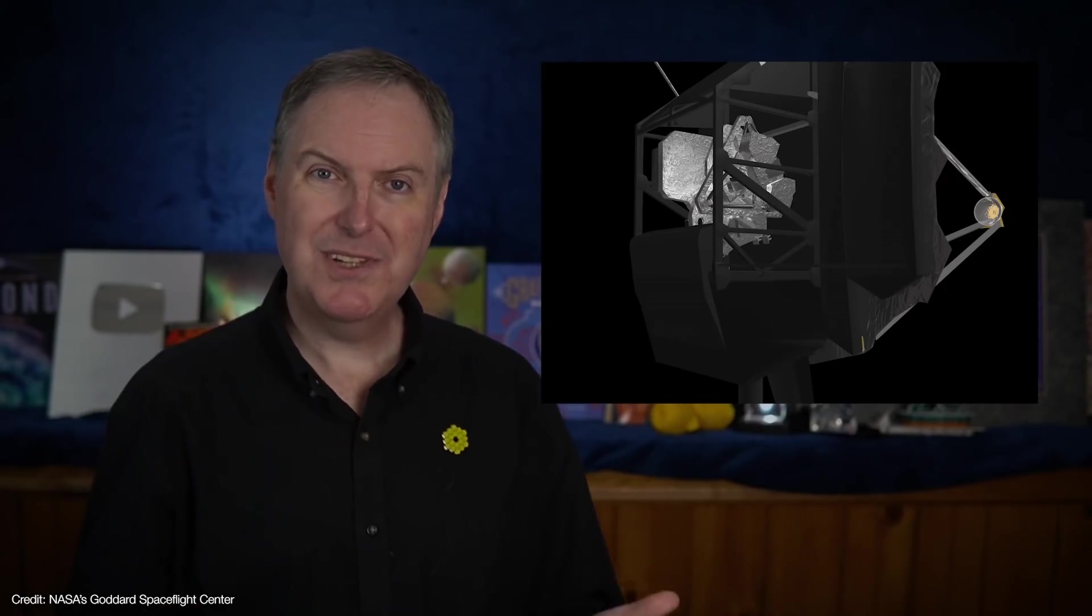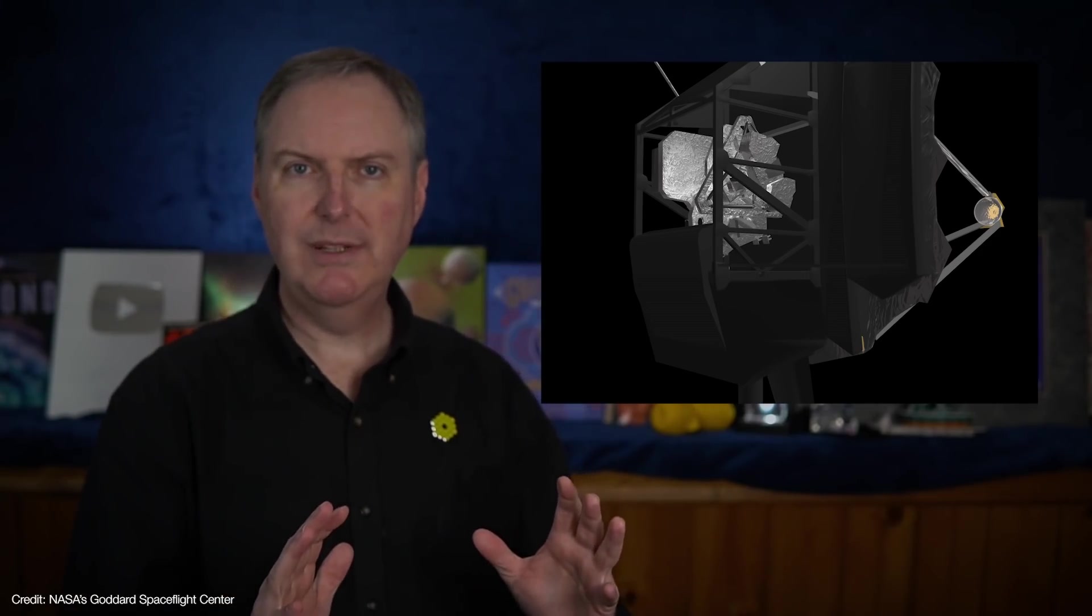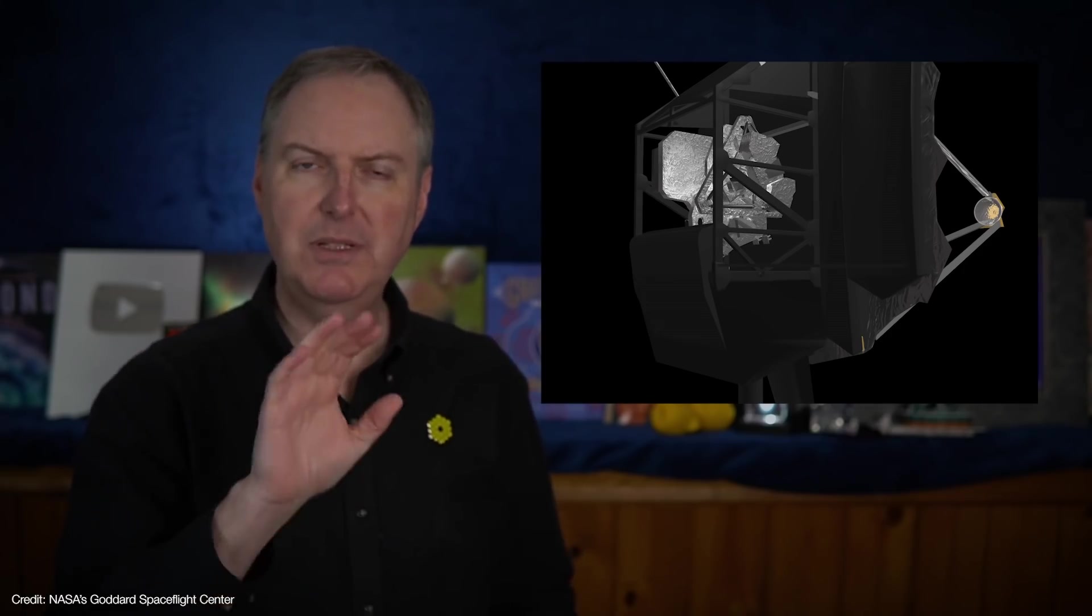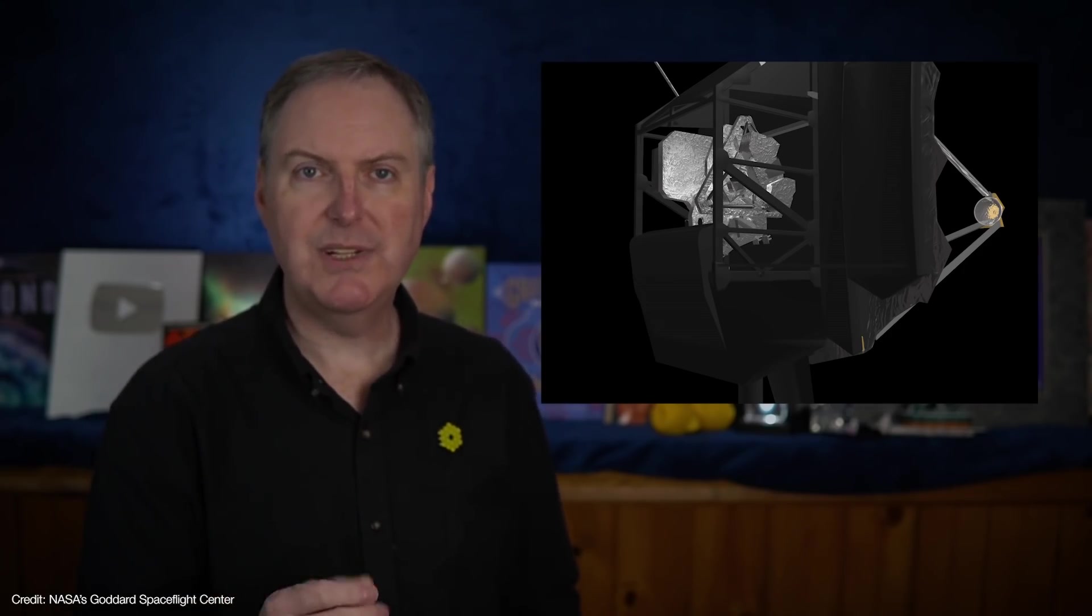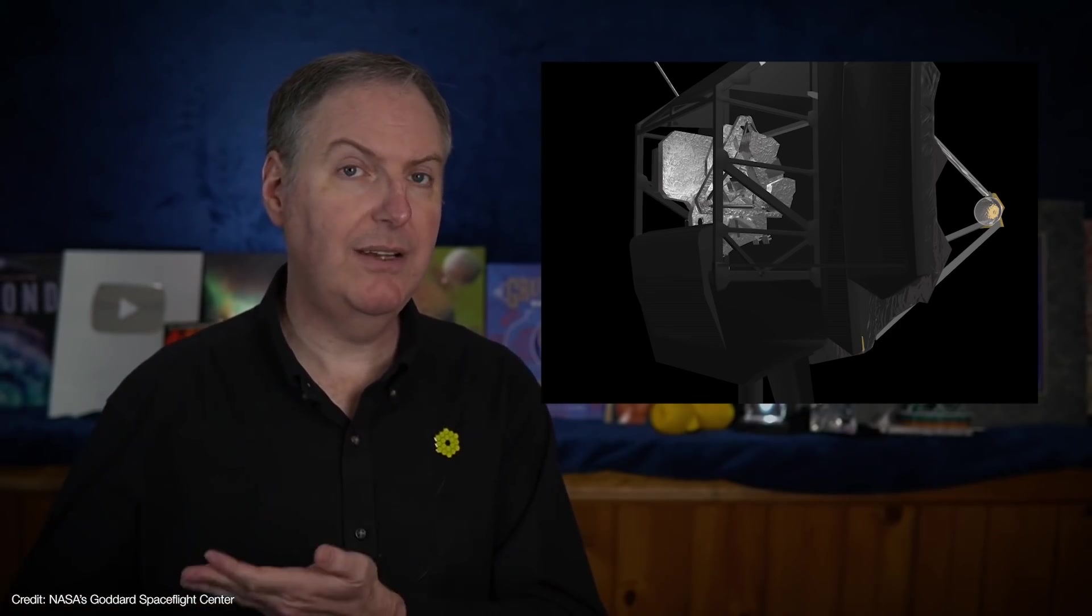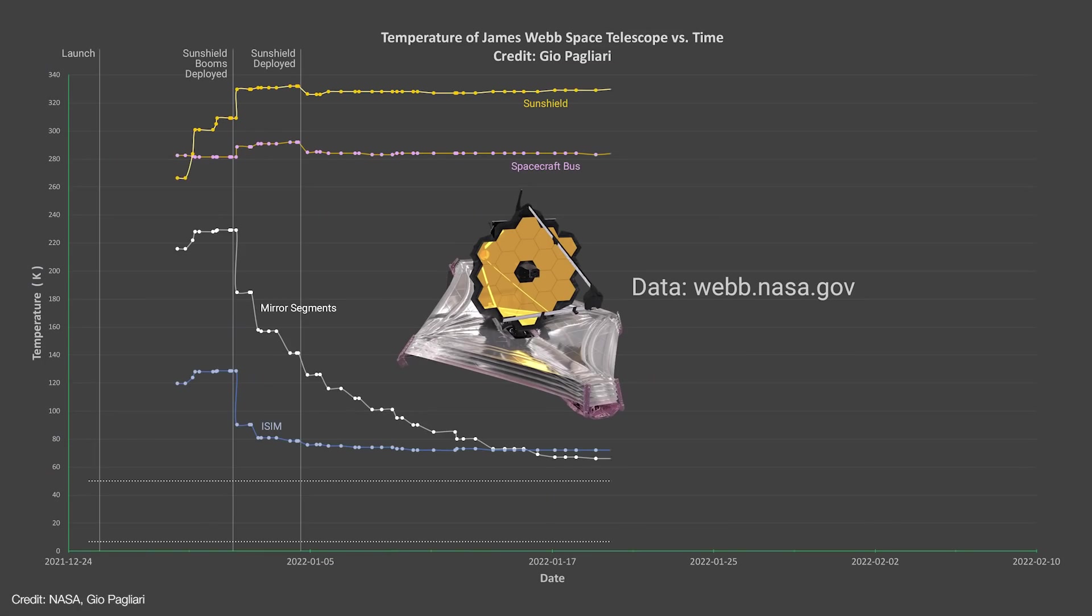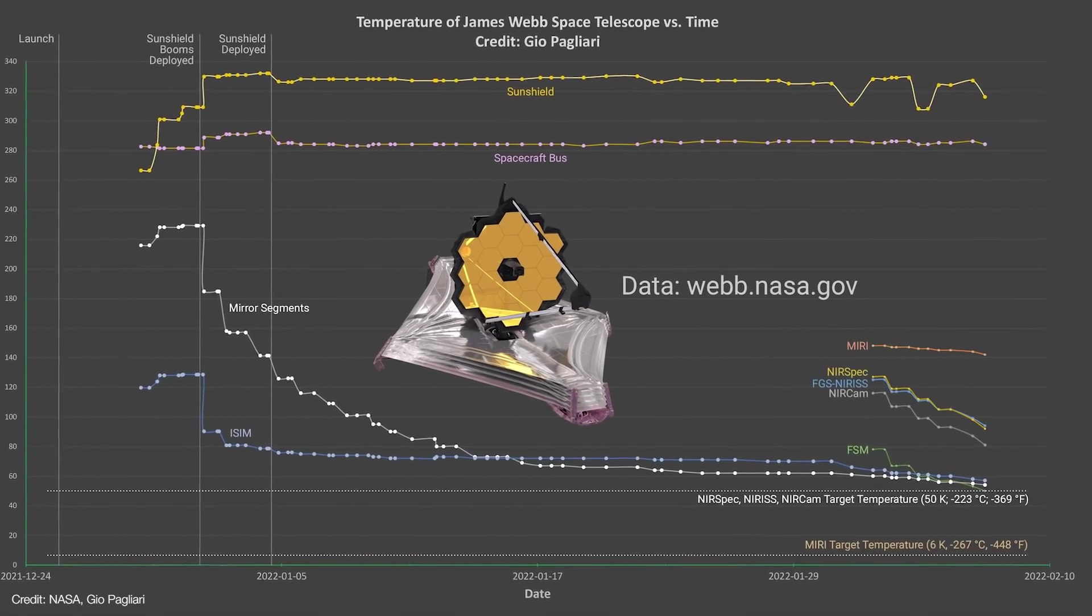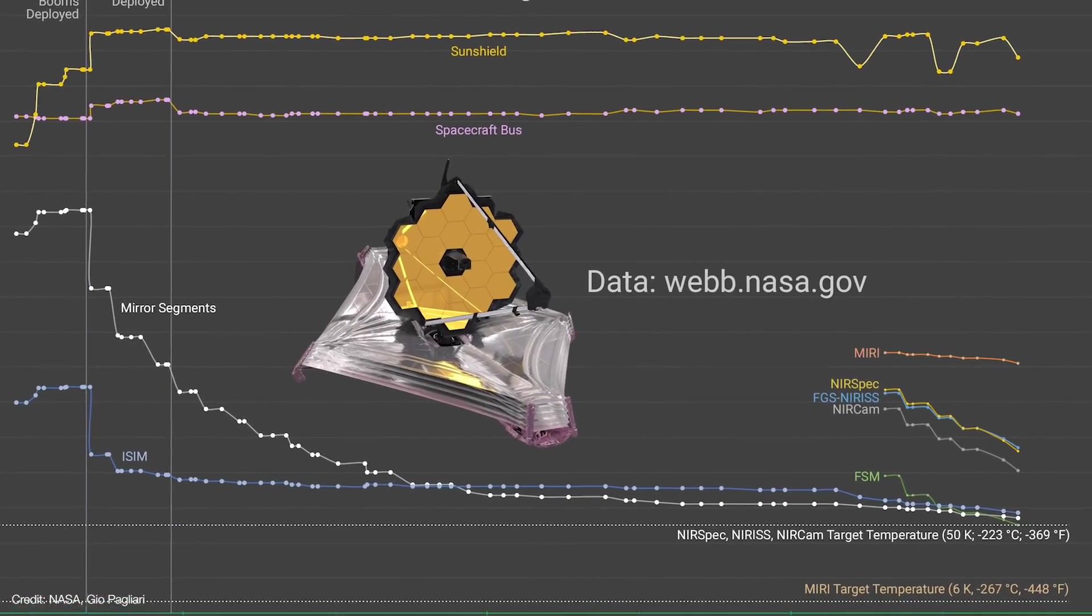So those heaters kept the instruments just warm enough to prevent contamination as the rest of the ISIM structure cooled. When the ISIM's temperature fell below 140 Kelvin, any remaining moisture was either completely trapped inside the structure or had already frozen solid onto non-critical surfaces. So even though the sun shield was deployed over a month ago, the instruments are only now finally being allowed to cool down to their operating temperatures.